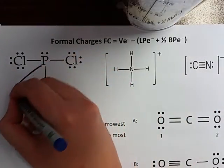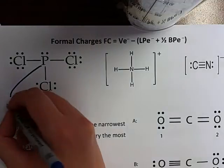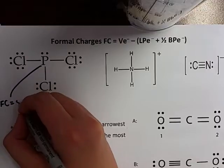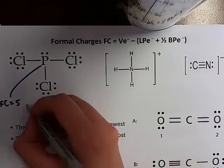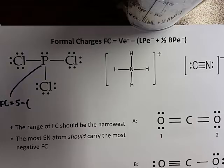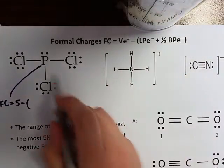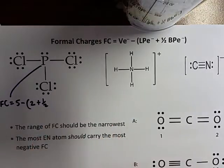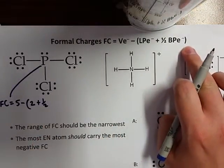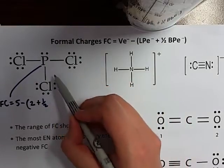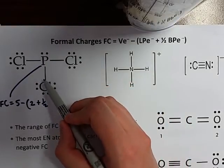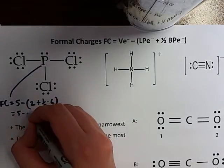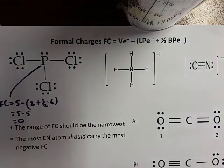Let's try it for phosphorus. Phosphorus on the periodic table has five valence electrons, minus lone pair electrons — it's got two — plus a half times how many bonding pair electrons are shared around it: one, two, three, four, five, six. Five minus five gives you zero.